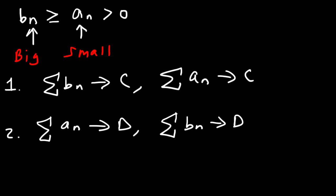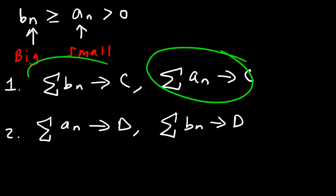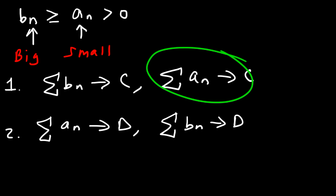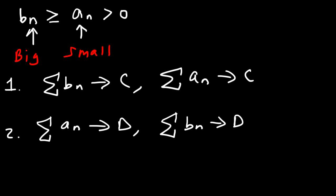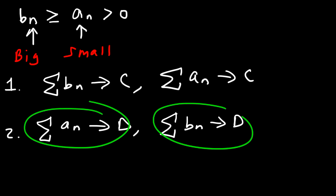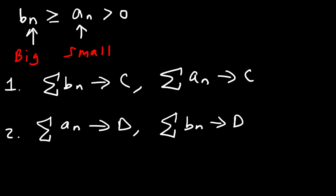The reverse statements are inconclusive. I can't say that if the small series converges, then the big series converges — the big series may converge or it may diverge. Similarly, I can't say that if the big series diverges, then the small series will diverge as well. So just keep that in mind.